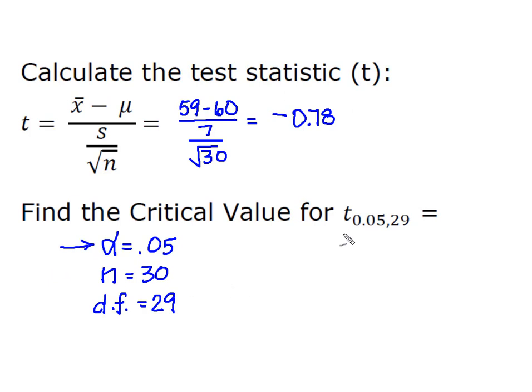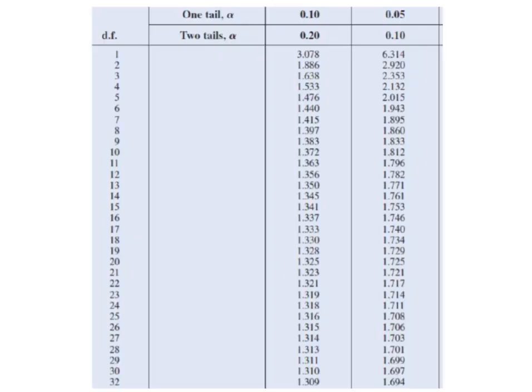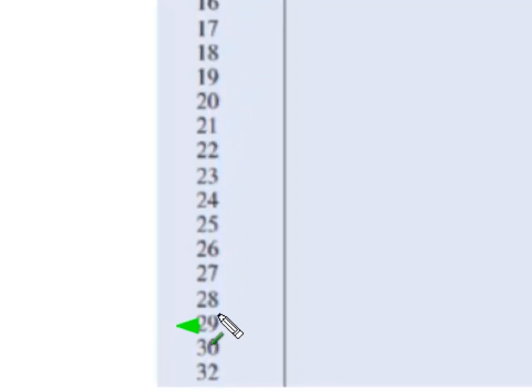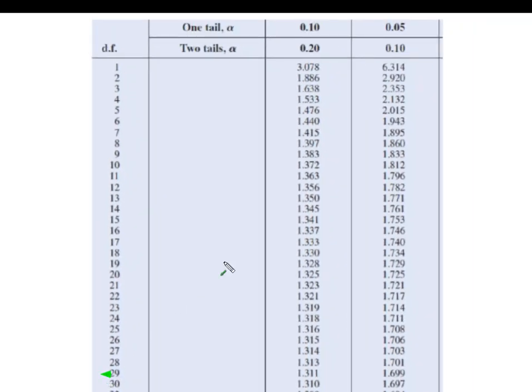So now I'm going to look up in my normal distribution chart t at 0.05 with 29 degrees of freedom. So I'm going to come down and I want to find my 29 degrees of freedom, which is going to be right here.